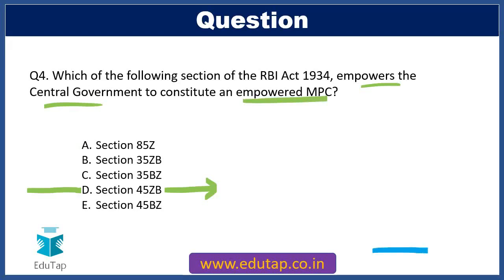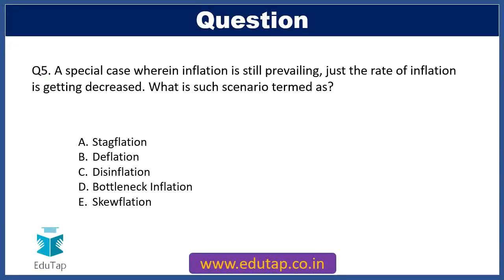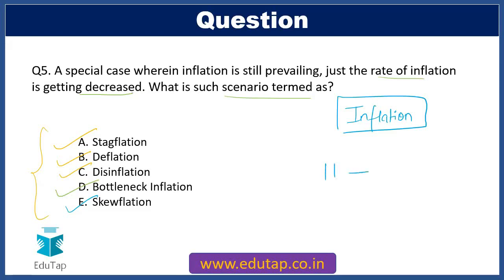Moving to our fifth question: a special case wherein inflation is still prevailing, just that the rate of inflation is getting decreased — what is such a scenario termed as? Option A: stagflation. Option B: deflation. Option C: disinflation. Option D: bottleneck inflation. Option E: Q-flation. This question comes from the inflation topic — if your concepts are clear, it should not be difficult. Do pause, apply your concepts, and then move on to cross-check your answer.